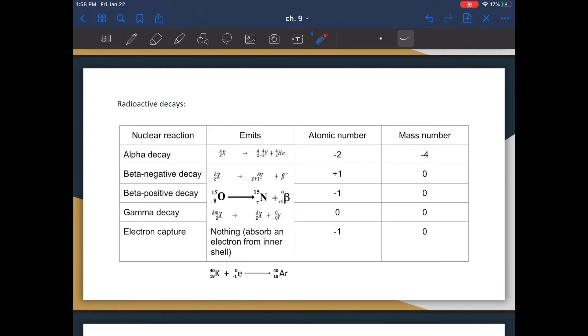Beta negative decay is when you have your original particle, and this particle emits an electron. However, it doesn't emit an electron from its orbitals of electrons. It emits an electron by taking a neutron and converting it to a proton. So like we know, a neutron is neutral, and a proton has a positive charge. So by removing an electron from your neutron, you basically get an additional proton, which raises your atomic number by one, but leaves your mass number the same.